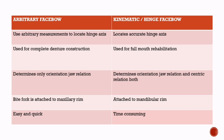In arbitrary face bow, the bite fork is attached to the maxillary rim, whereas in kinematic face bow, the bite fork is attached to the mandibular rim. Recording using arbitrary face bow is an easy and quick method, whereas recording with kinematic face bow is time consuming.